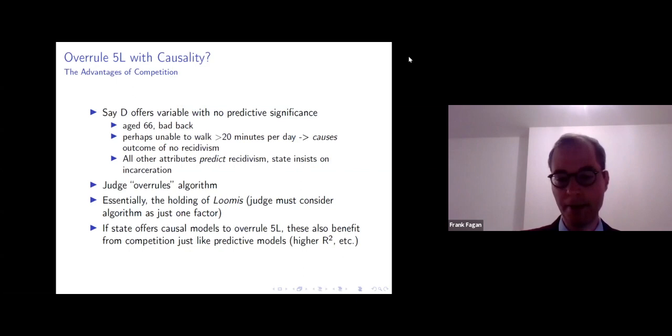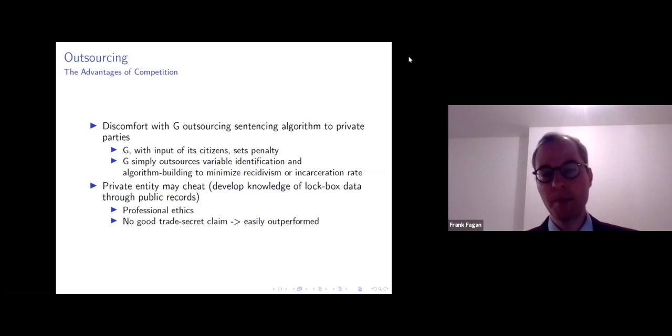When I present this paper in Europe, there's always some type of discomfort with the government outsourcing a sentencing algorithm or any algorithm to private parties. And the response that I usually offer is that the government with the input of its citizens sets the penalty, five years in prison, six years in prison, particular fine, whatever it might be. And the government simply outsources in our proposal, variable identification and some algorithm building in order to achieve that objective or that penalty.